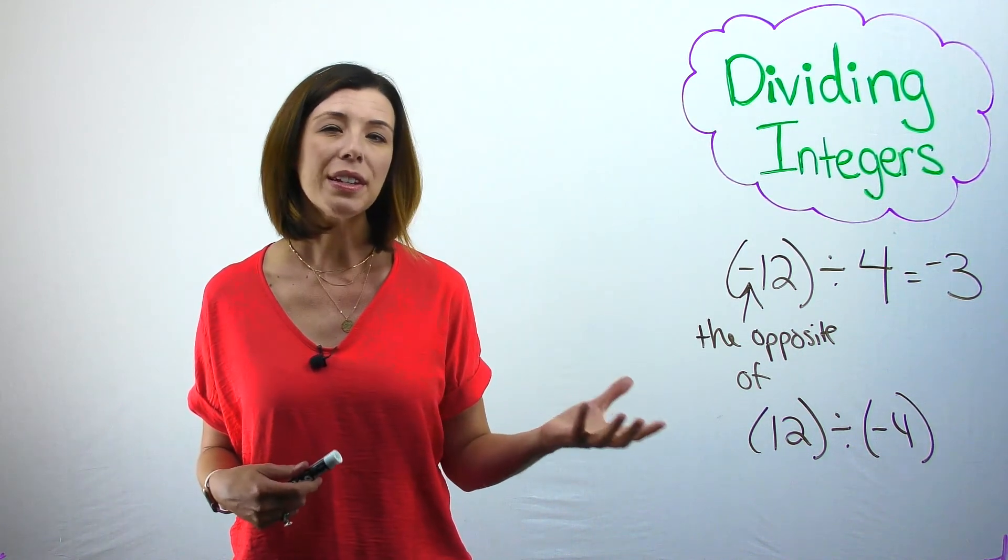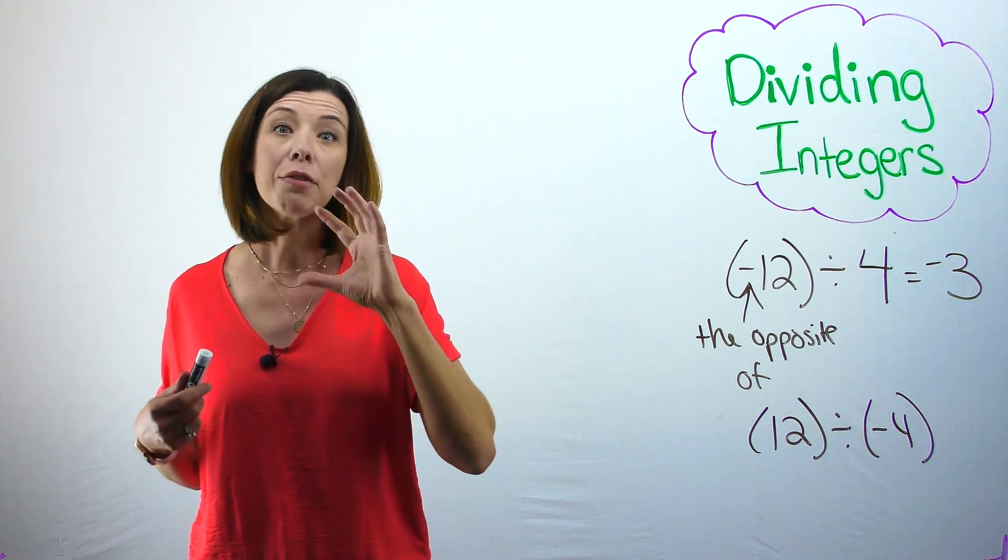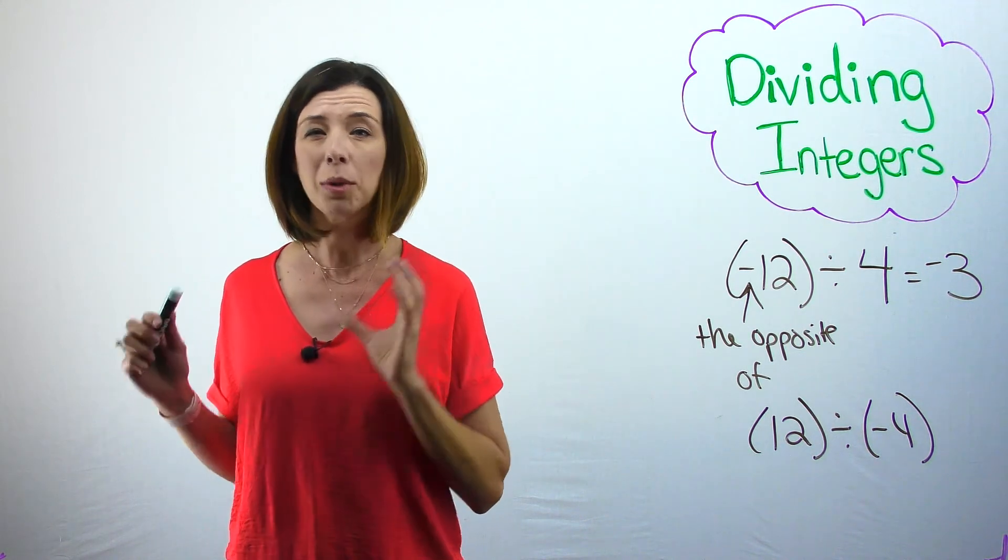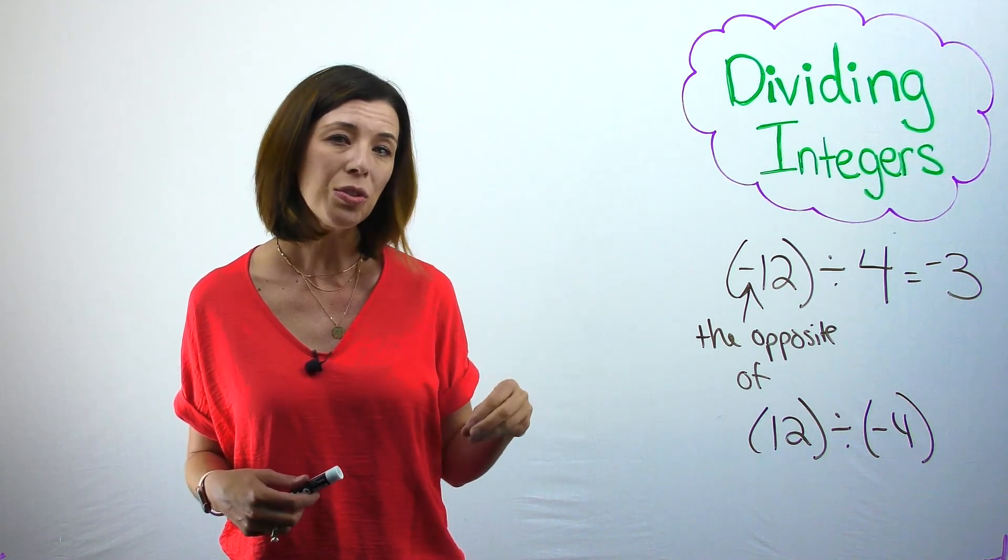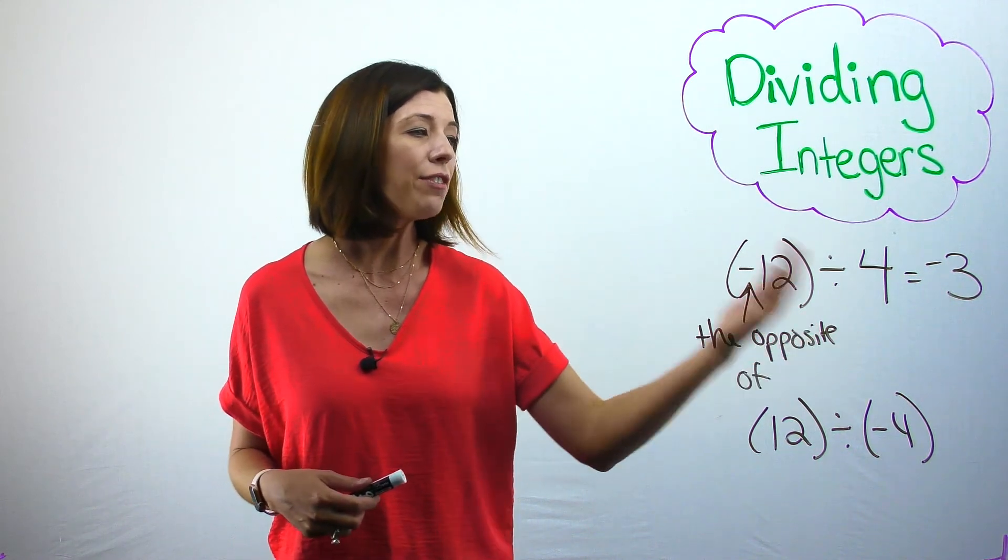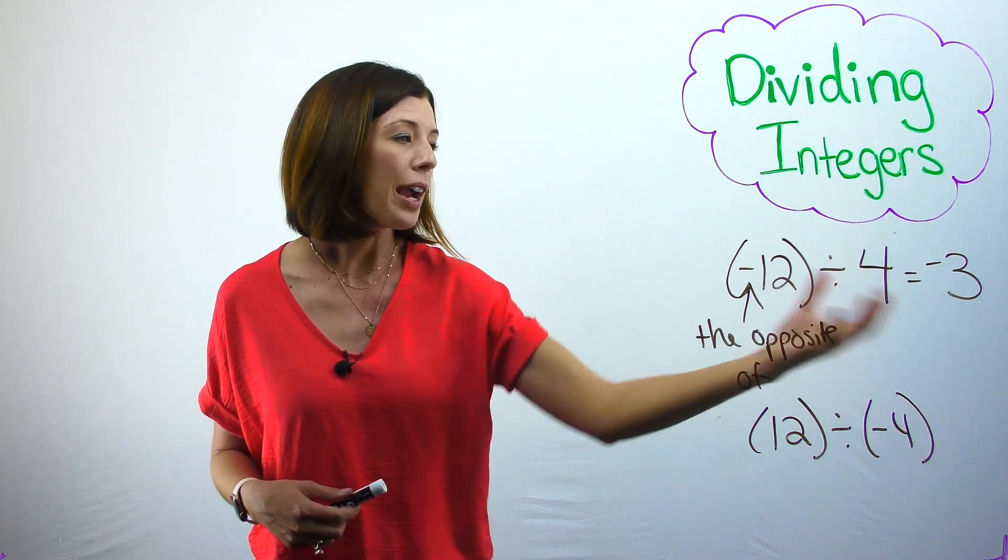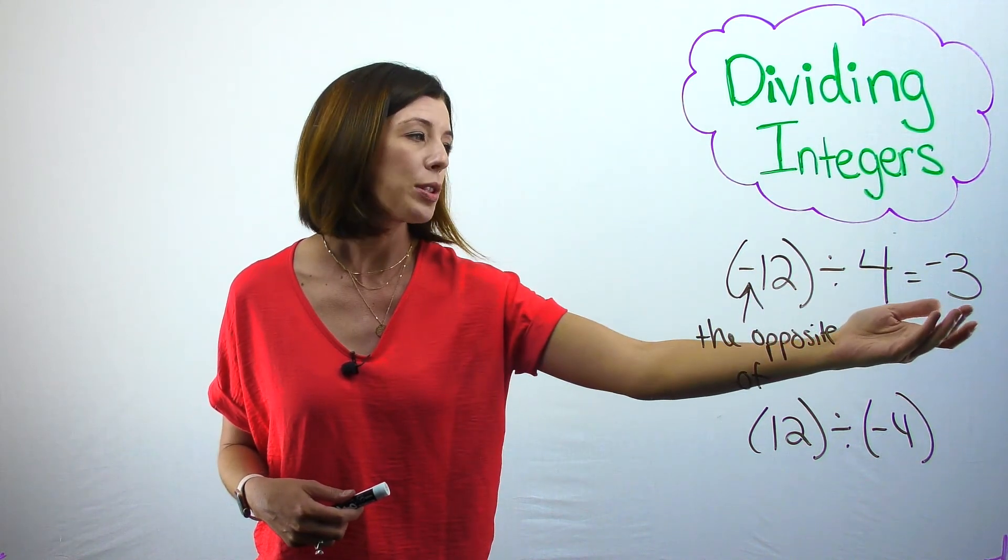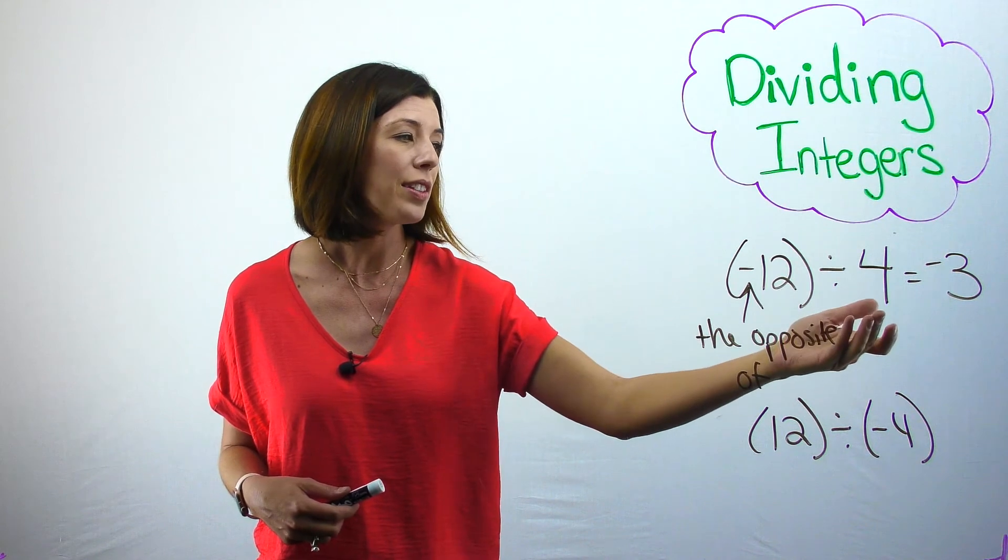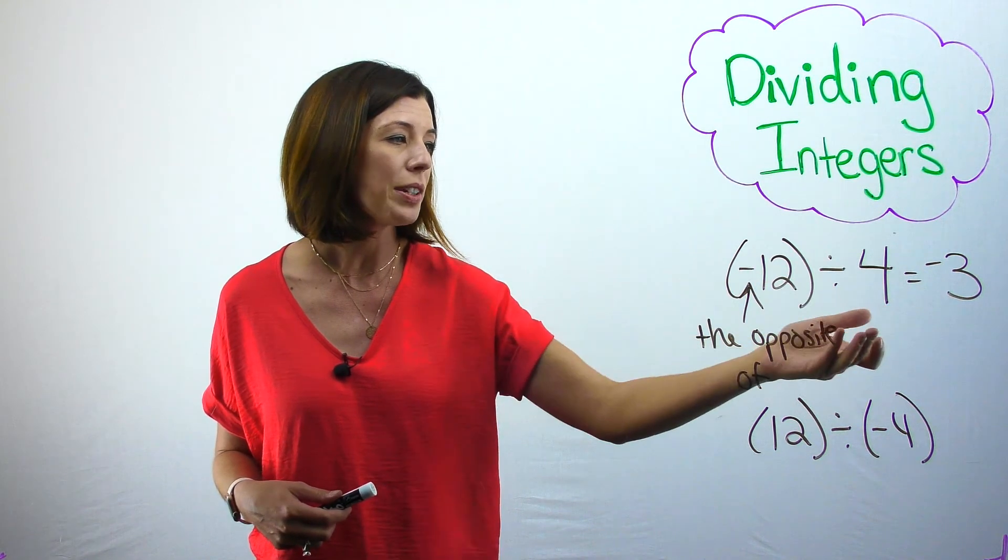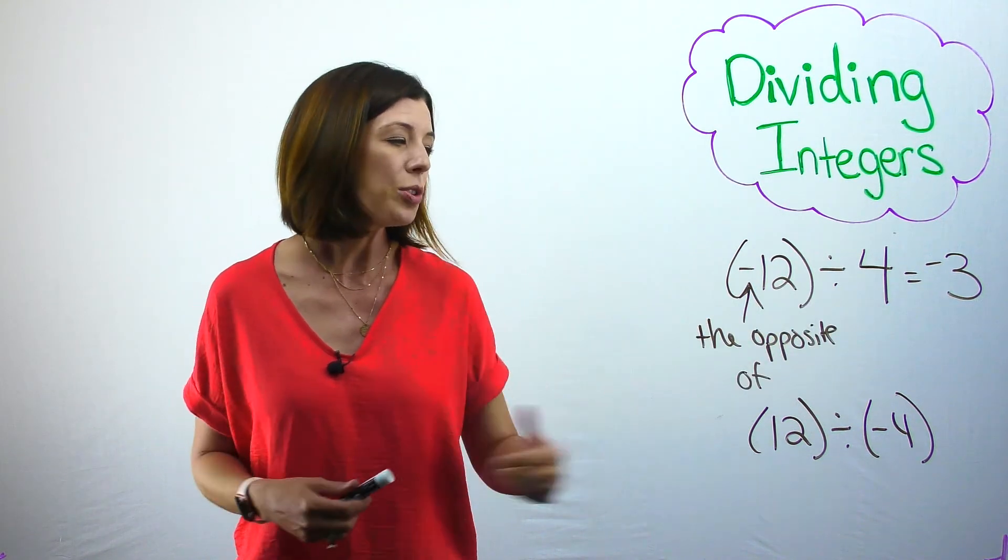One workaround for this is if students understand and have modeled with integer chips on multiplication, they can actually tie this to the division. So if they have figured out through that repeated reasoning that I can check my division problem by multiplying the quotient by the divisor to get the dividend. So negative 3 times 4 gives me negative 12. I can do it the same way here.